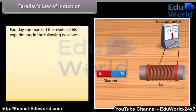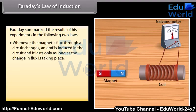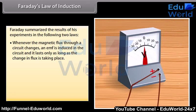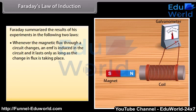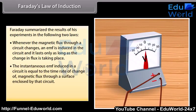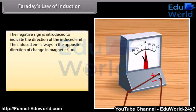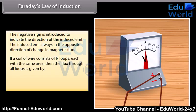Faraday's law of induction: Faraday summarized the results of his experiments in two laws. First, whenever the magnetic flux through a circuit changes, an EMF is induced in the circuit, and it lasts only as long as the change in flux is taking place. Second, the instantaneous EMF induced in a circuit is equal to the time rate of change of magnetic flux through the surface enclosed by that circuit: E = −dΦ_B/dt. The negative sign indicates the direction of the induced EMF, which always opposes the change in magnetic flux. If a coil consists of N loops, the flux through all loops is given by E = −N dΦ_B/dt.